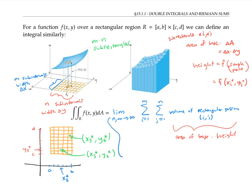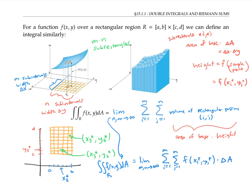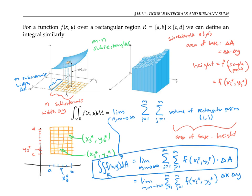Now I'm ready to rewrite the limit expression that represents the double integral. It's the limit as m and n go to infinity of the sum from i equals one to m and j equals one to n of f of (x sub i star, y sub j star) times delta A. Or we can rewrite delta A as delta x times delta y. This is the Riemann sum definition of the double integral. Once again, x sub i star and y sub j star become x and y in the integral notation, and delta A becomes dA.